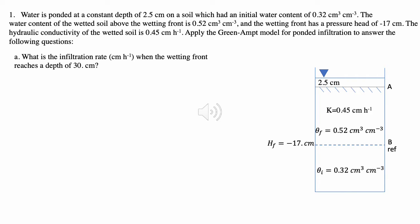What is the infiltration rate in centimeters per hour when the wetting front reaches a depth of 30 centimeters? We will be using the Green-Ampt equation for infiltration rate, which is: i equals K — hydraulic conductivity — times LF, the distance between the soil surface and the wetting front, plus H_not, the pressure head at the soil surface, minus H_f, the pressure head at the wetting front, all divided by LF.